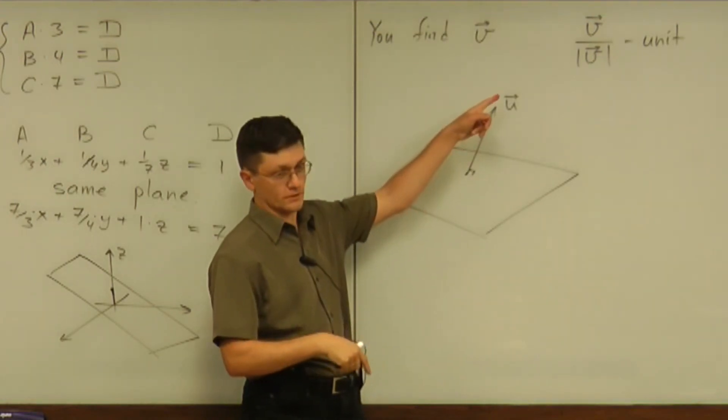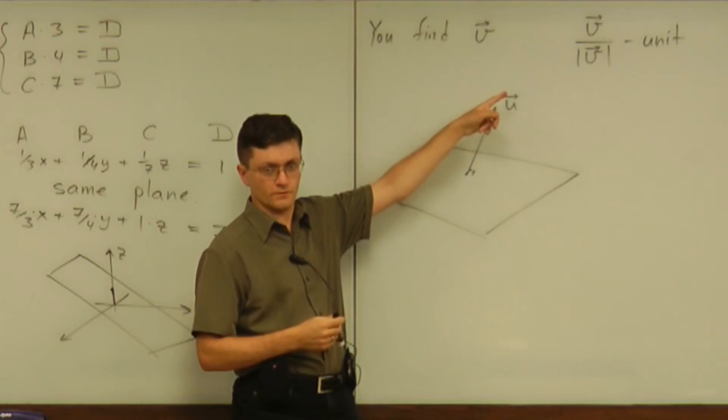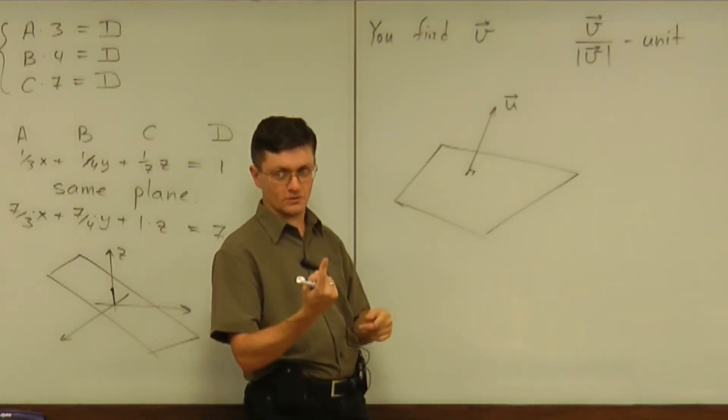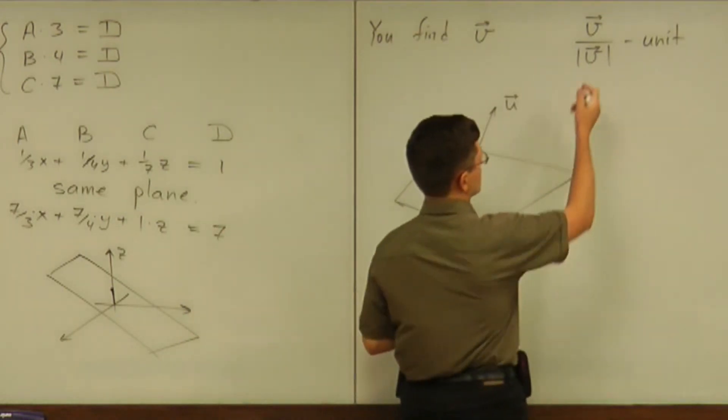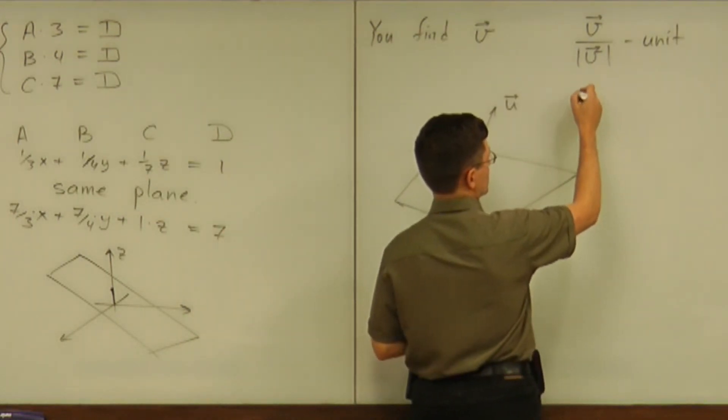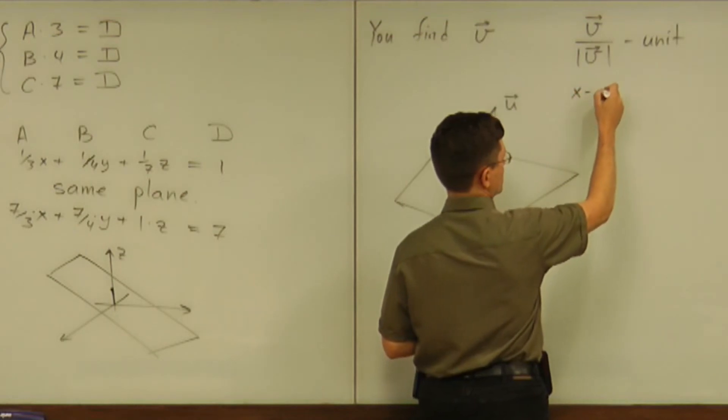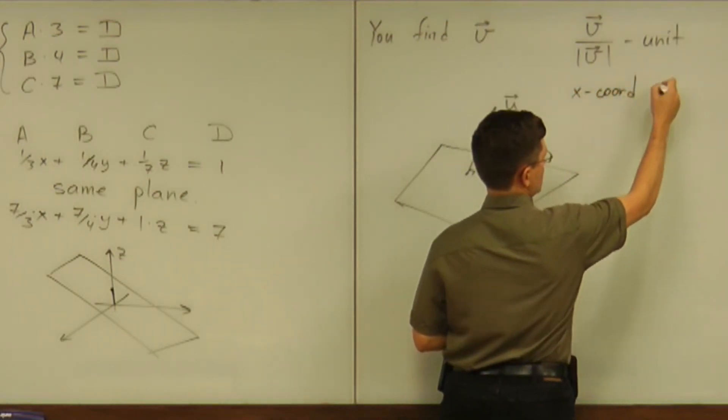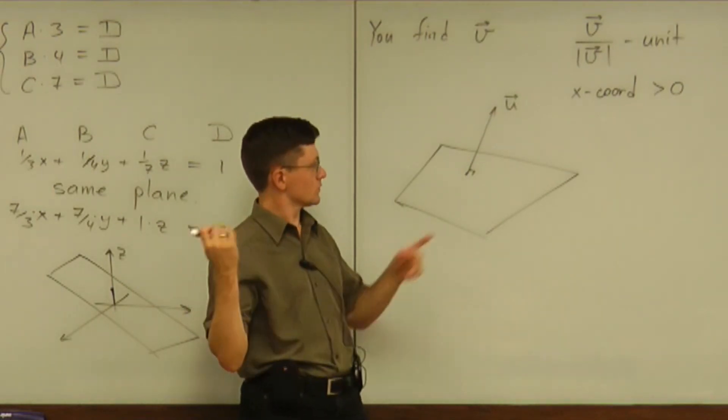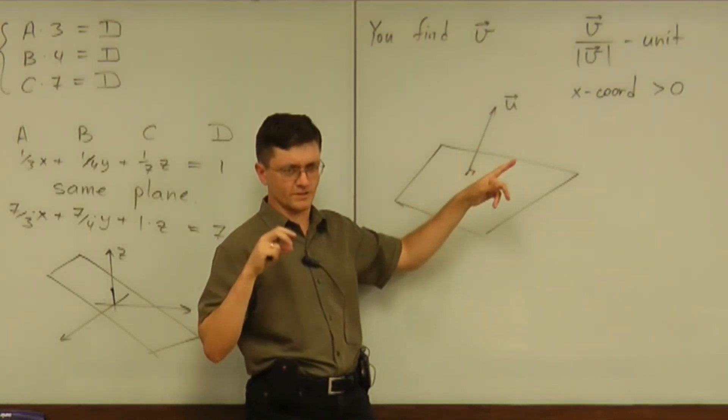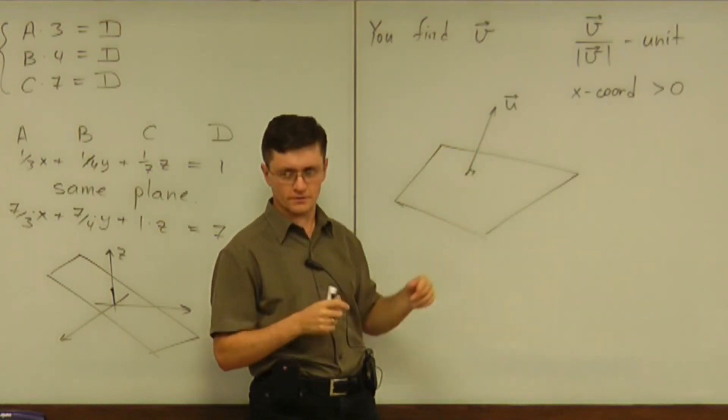So there are two possible answers, even if I ask you for a unit vector. And then how will I distinguish between these two? Well, I will ask you to choose the one with the x-coordinate greater than zero. I don't remember specifics of what exactly I'm asking there. Maybe z-coordinate is greater than zero.